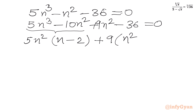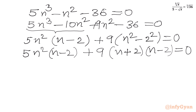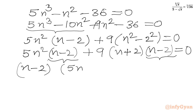From the remaining terms, factoring out (n minus 2) gives us (n minus 2)(5n² + 9n + 18) equal to 0. Wait — after splitting: 5n²(n−2) + 9(n² + ... ) — ultimately we get the factored form (n minus 2)(5n² + 9n + 18) equal to 0.